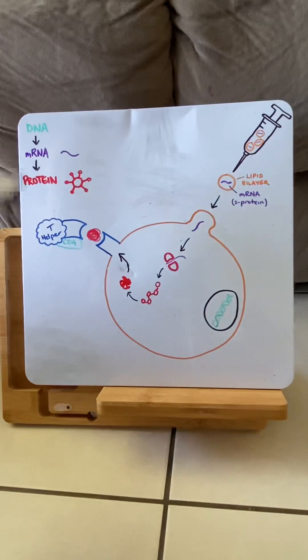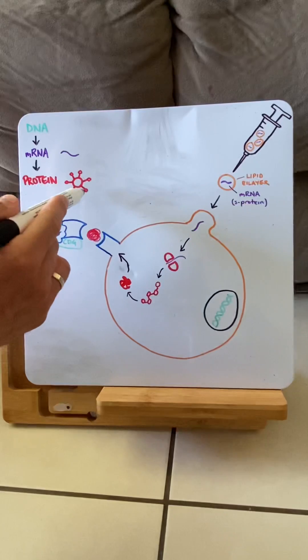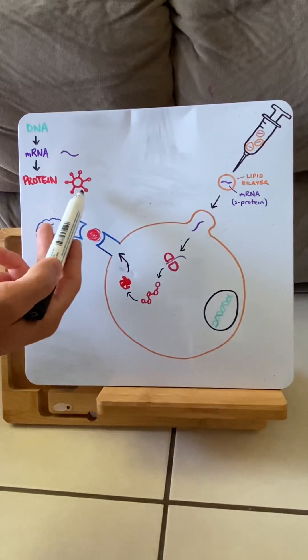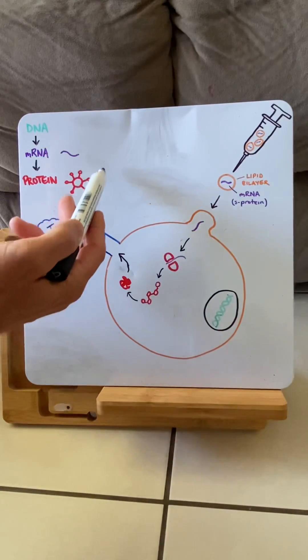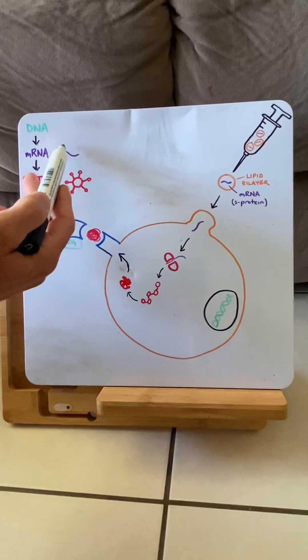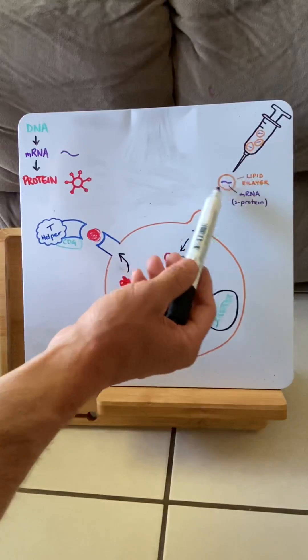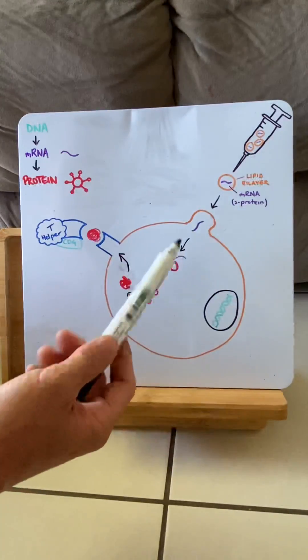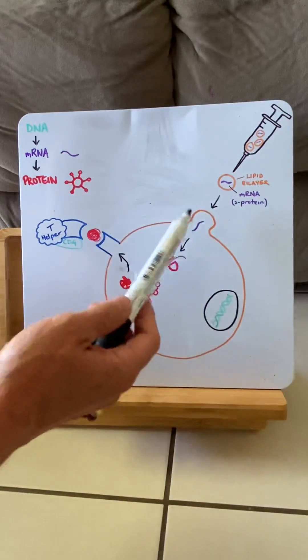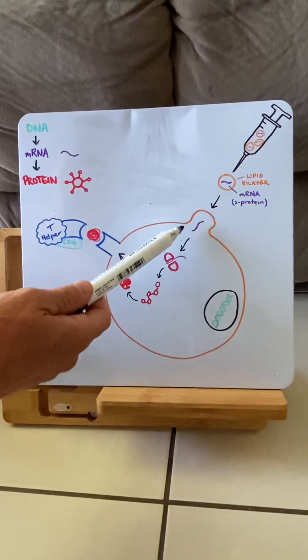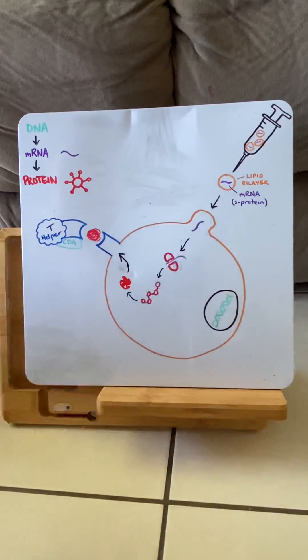So what they're doing in the Moderna and Pfizer vaccine is they're taking just one protein on the surface called an S protein, and they move backwards in this process and find out the mRNA structure that makes it. They take this mRNA, they put it into a lipid bilayer, so basically fat. And the importance of this is our cells are surrounded by fat. So it means they can merge together nicely and release that mRNA into our cells.